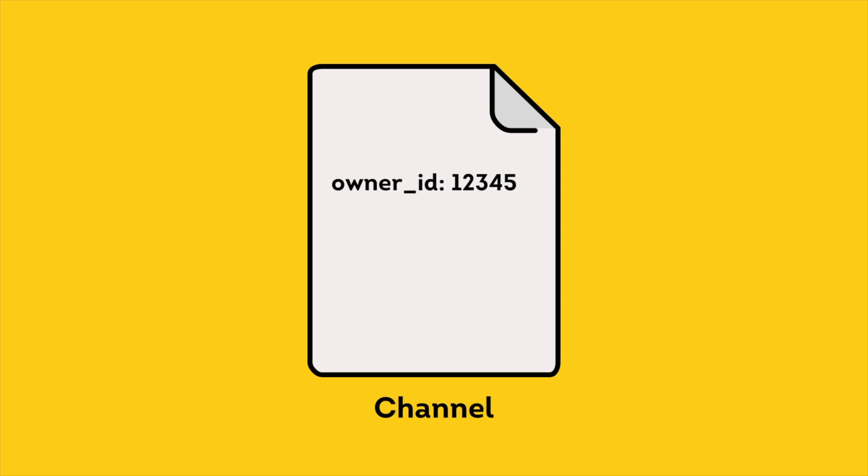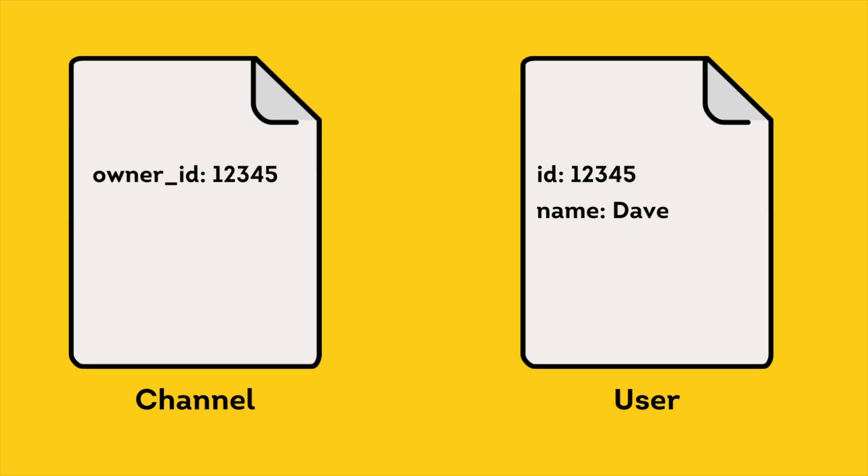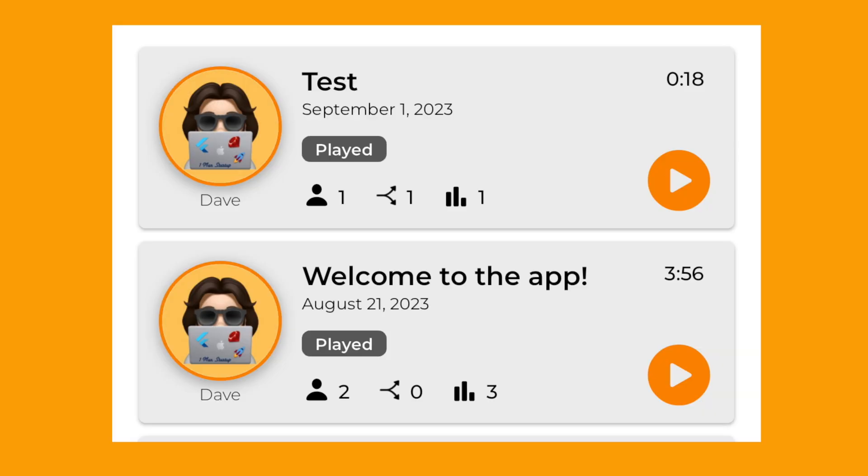In Roads there's a concept of a channel, and a channel can have episodes. Episodes can have comments, and all three — channel, episode, and comment — have an owner, which is a user object. In Firestore, you'd create the channel document and reference the user either by their ID or by embedding data. If you reference by ID, you make one call to get the channel, then an additional call to get the user — that's already two reads. If a channel has 10 episodes, that's 10 more reads, plus reads for each episode's owner.